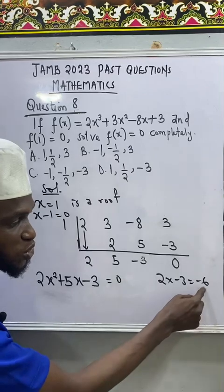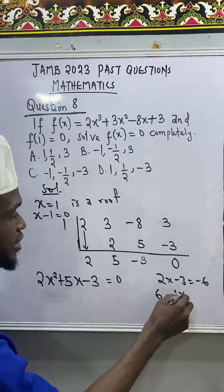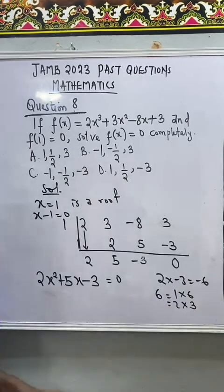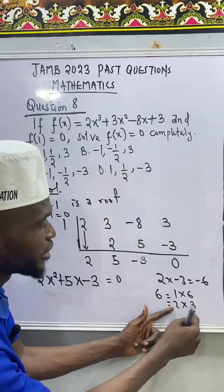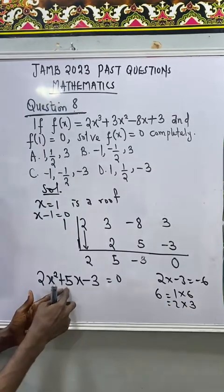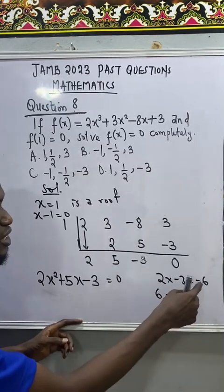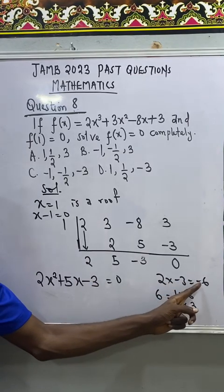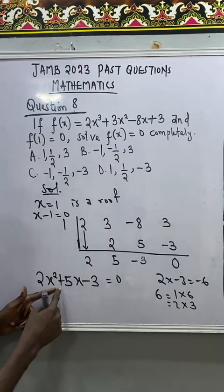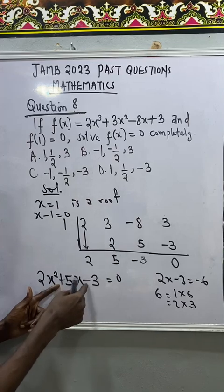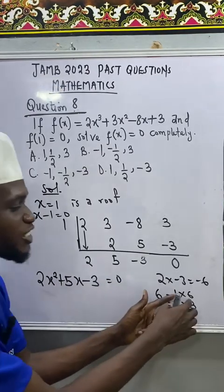Just rewrite the factors of 6. Write the factors of 6, the factor pairs. 6 is the same thing as 1 times 6 or 2 times 3. We can't have more than that. Now, out of these pairs, 1 and 6 and 2 and 3, which one can we achieve 5 from it? Both of them will give us 5. But which one will give us negative 6 and positive 5? So, don't bother yourself again. Anytime the middle is positive and the last is negative, just know that the bigger number that you are using here must be positive and the smaller number that you are using here must be negative.